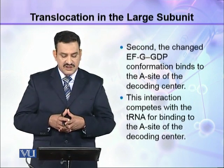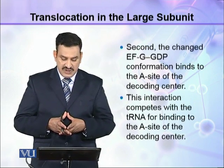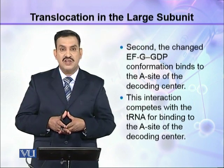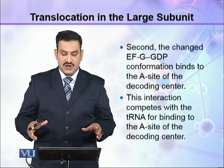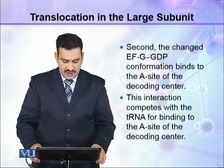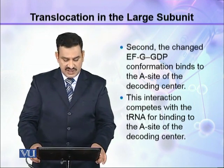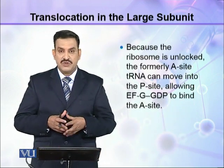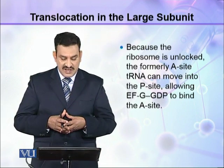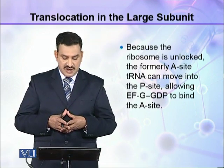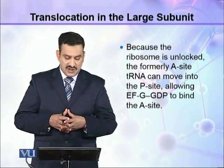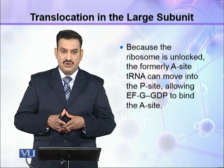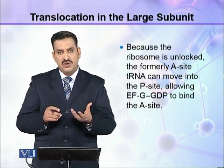Second, the changed EFG-GDP conformation binds to the A site of the decoding center. This interaction competes with the tRNA for binding to the A site of the decoding center. Because the ribosome is unlocked, the formerly A-site tRNA can move into the P site, allowing EFG-GDP to bind the A site.